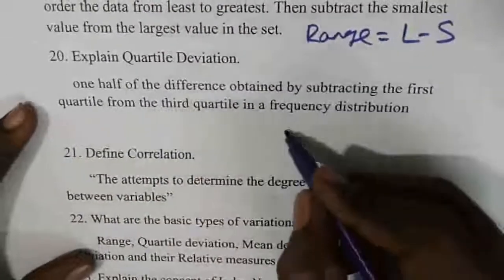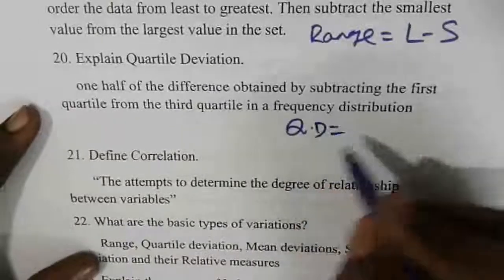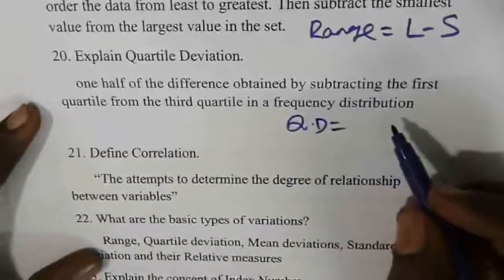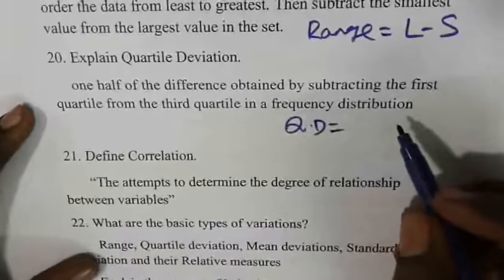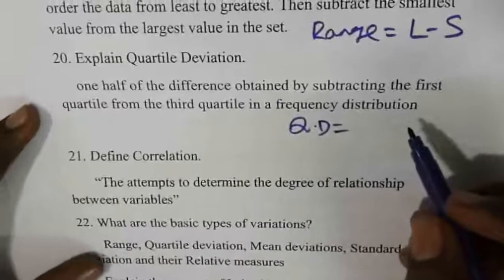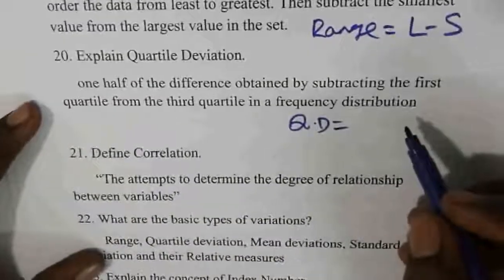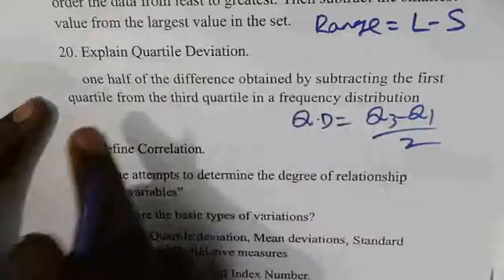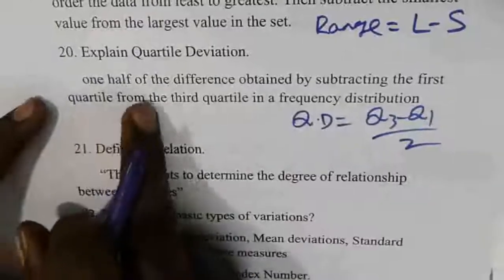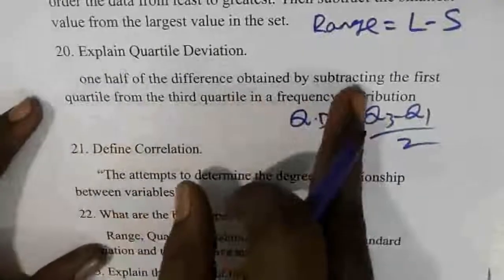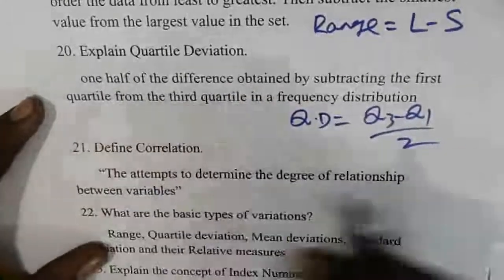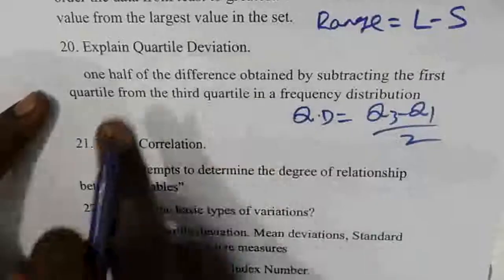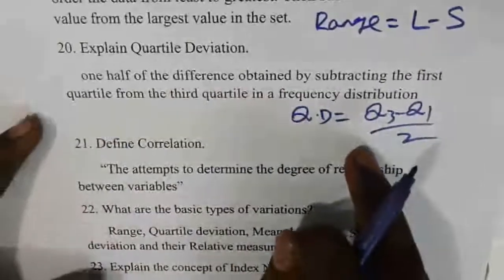Quartile deviation (QD): this is one-half of the difference obtained by subtracting the first quartile from the third quartile, that is Q3 minus Q1 divided by 2. The coefficient of deviation is also derived from Q3 minus Q1.